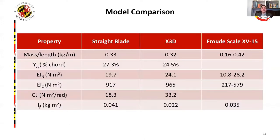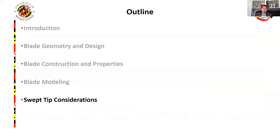Here we see a total overall summary of the blade inertial and structural properties. These results show that we now have a physical set of blades which have been characterized, and an accurate finite element model for the twisted and untwisted blades. With this, we move on to the swept tip blade.